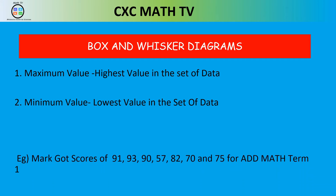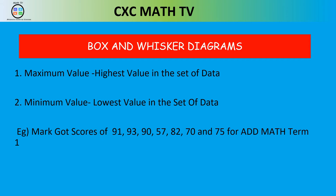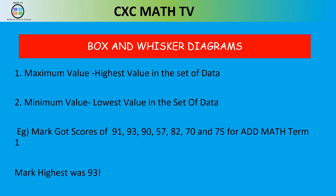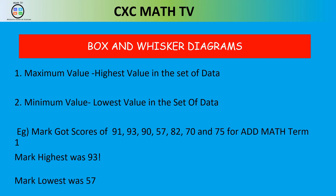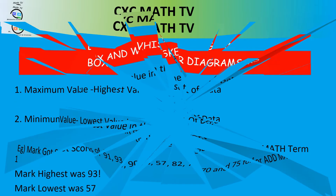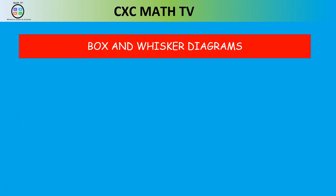For example, Mark got these scores on his additional mathematics test for term one: 91, 93, 57, 82, 70, and 75. Mark's highest score is 93, and his lowest score is 57.